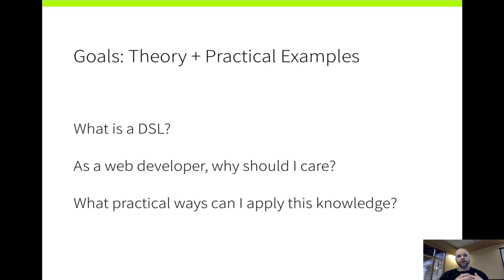So let's start with some theory and practical examples. We'll look at what a domain-specific language is — the formal definition. As a web developer — and how many people are web developers here? Yeah, pretty much everyone. I figured the title with JavaScript and CoffeeScript would mostly only interest people interested in web development. But as a web developer, why should we care about this information? My goal is to give you practical examples and things you can walk away with.